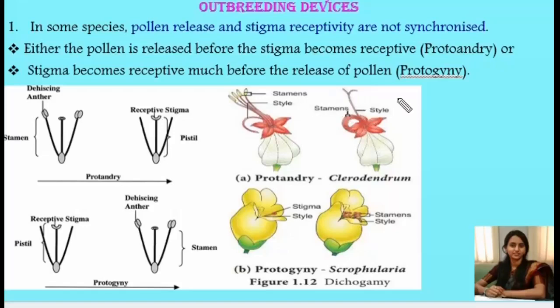This condition is known as protandry. Whereas in protogyny, in some other flowers the stigma becomes receptive much before the dehiscence of the anther. In this type of flower, the stigma is receptive, and when the stigma later loses its receptivity, the stamens and anthers mature and pollen grains are released. So in the first outbreeding device, pollen release and stigma receptivity are not synchronized.